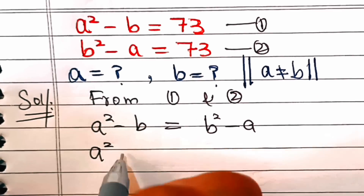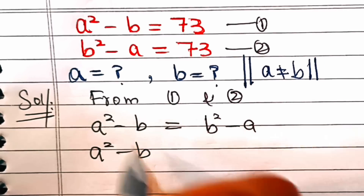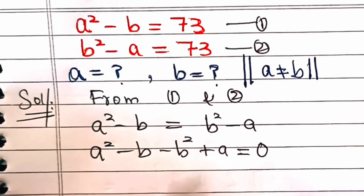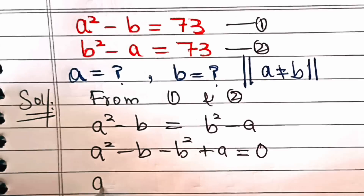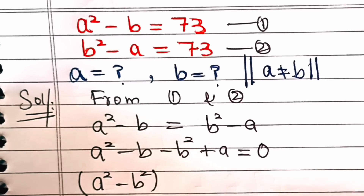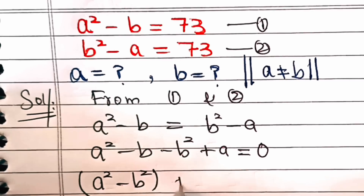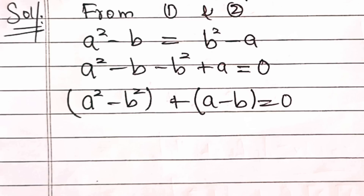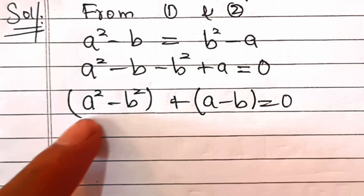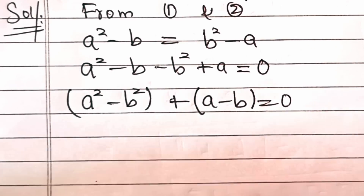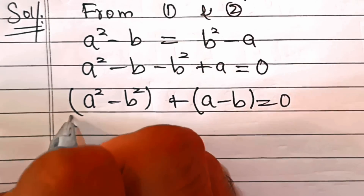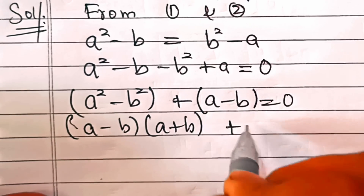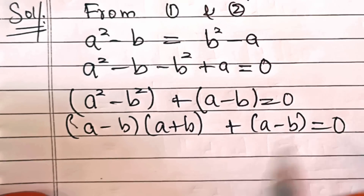Rearranging, we move terms to the left-hand side: a squared minus b squared plus a minus b equals 0. Now, a squared minus b squared is an algebraic identity equal to a minus b, times a plus b. So we get: a minus b, times a plus b, plus a minus b equals 0.